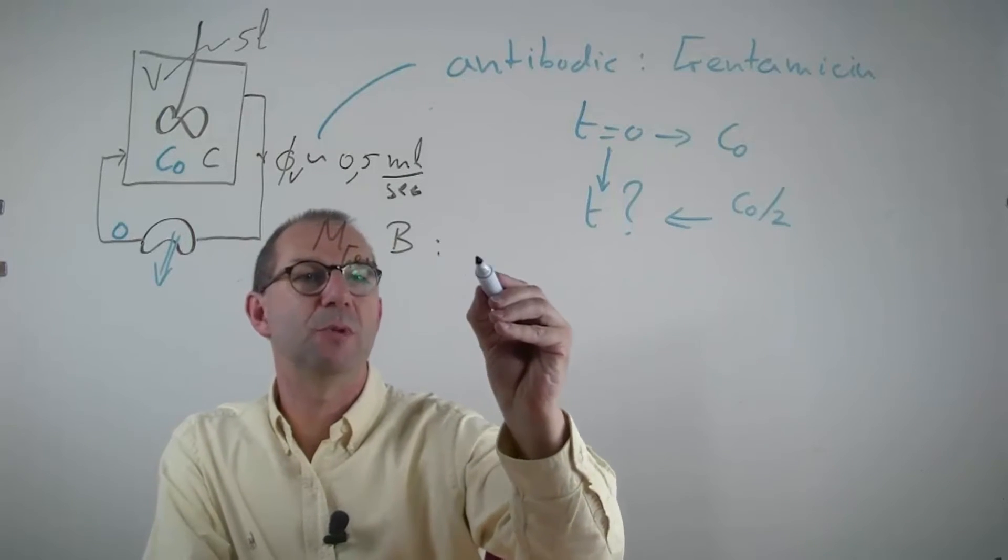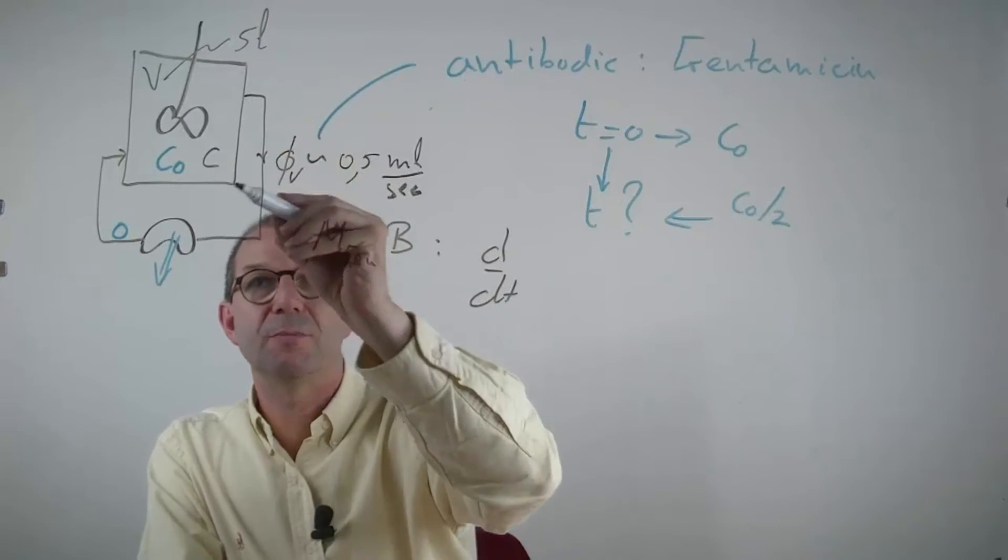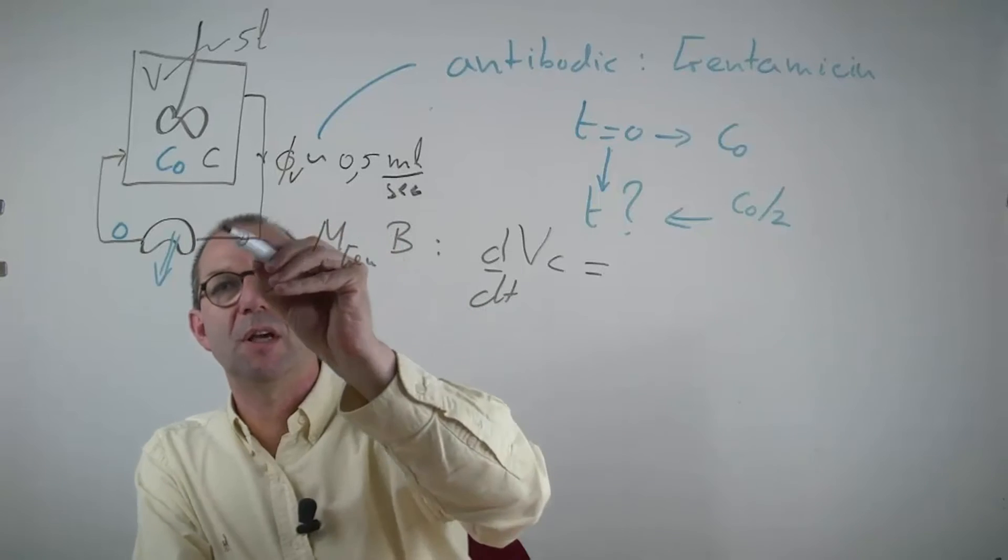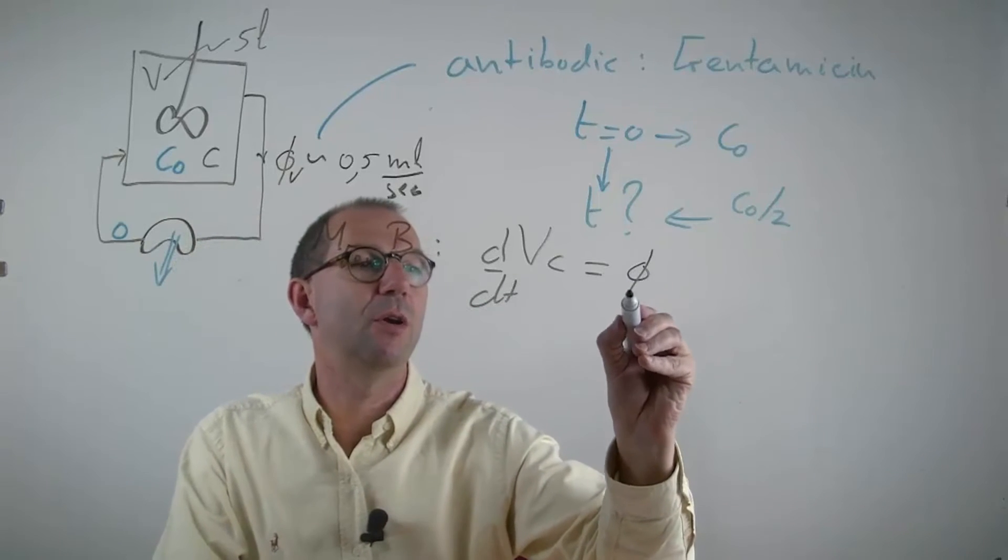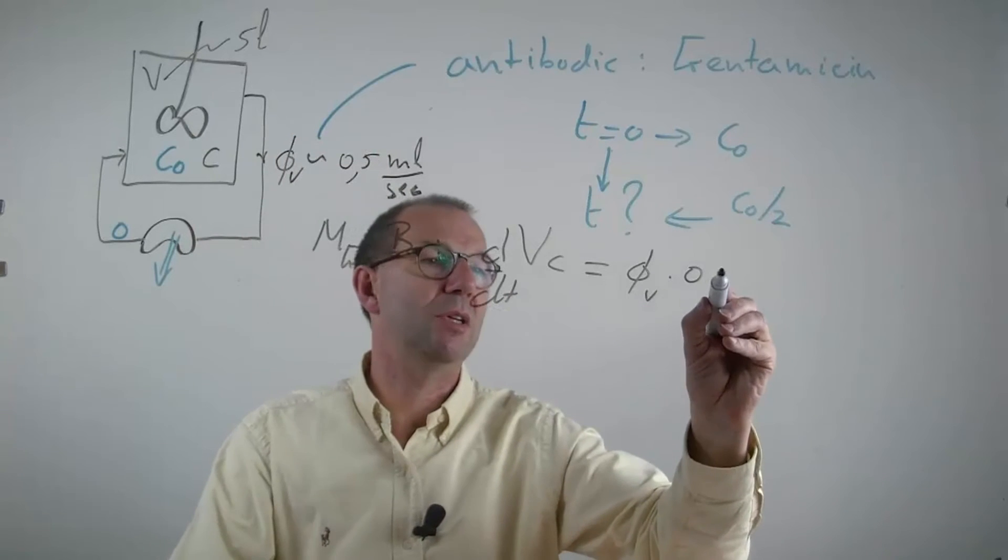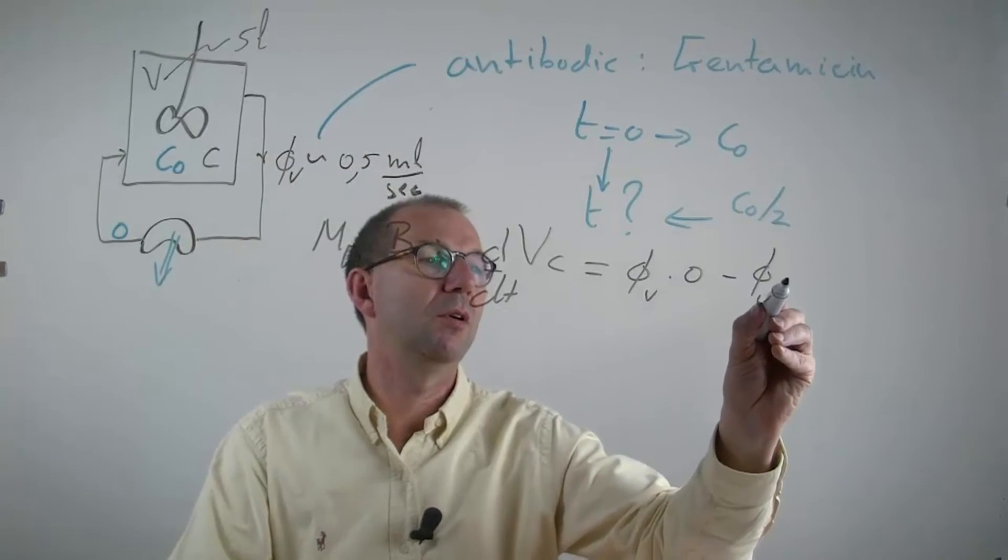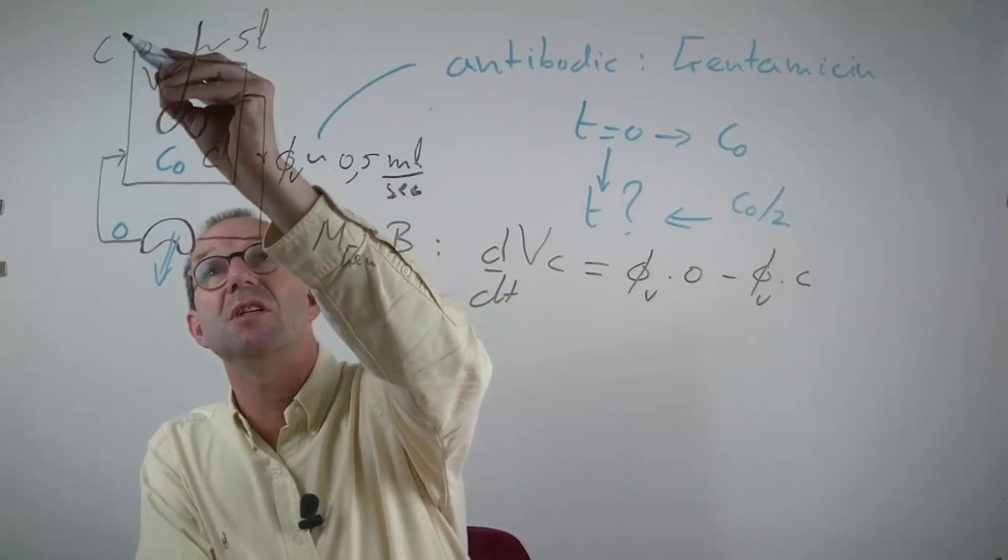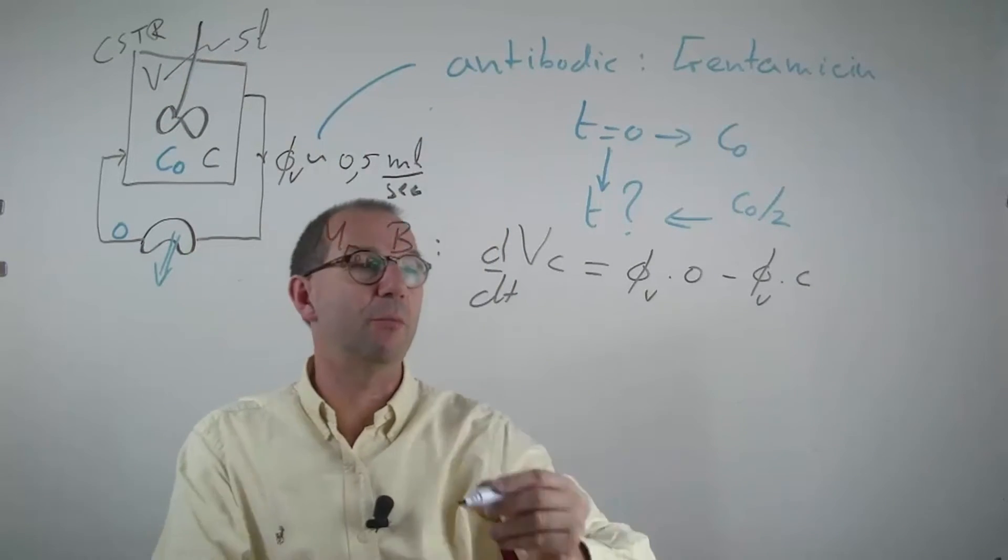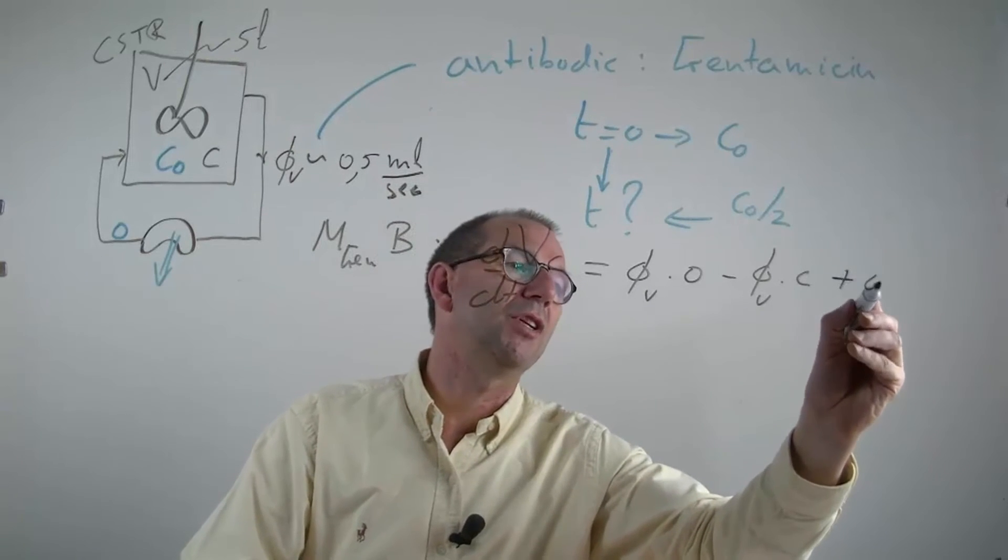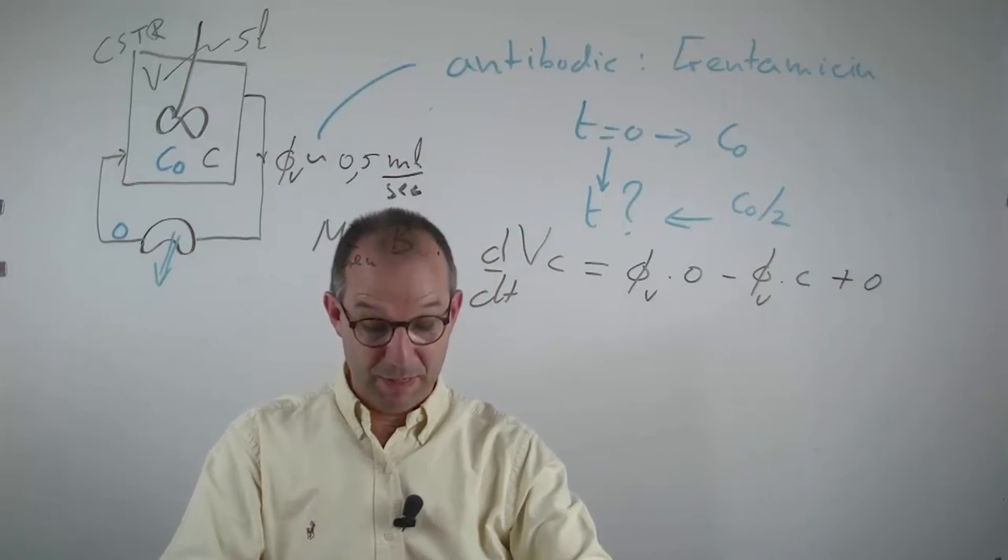And a mass balance will read the d/dt of the mass in your blood of that medicine, V×C, equals what comes in, that is a flow with 0 concentration, minus what goes out, that is the flow with the concentration in your blood, because it's treated as CSTR, that is roughly what we are when you consider these systems, plus a 0, because we don't produce any of these medicines.